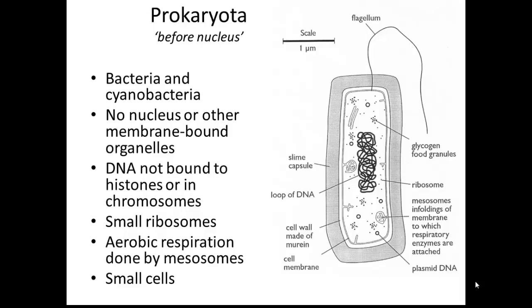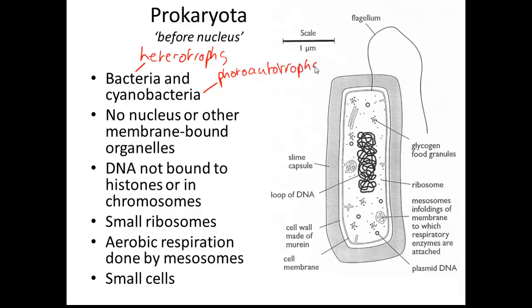Prokaryota literally means 'before a nucleus', and that is the way they are — they don't have a nucleus; that is their defining feature. It includes the bacteria and the cyanobacteria. Bacteria are heterotrophs, and cyanobacteria are photoautotrophs. A heterotroph is an organism which does not manufacture its own food — it feeds off other organisms, dead or alive. Cyanobacteria are photosynthetic, and therefore they are autotrophs — they self-feed by photosynthesis.